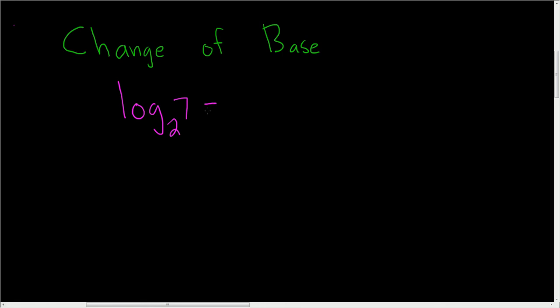change of base lets us write this as the natural log of 7 over the natural log of 2. So it's just the log of this one divided by the log of this one every single time. And you can put this in your calculator. Now when you put it in your calculator, it's really important to have the parentheses here and here. This ends up being approximately 2.8074 if you round to four decimal places.